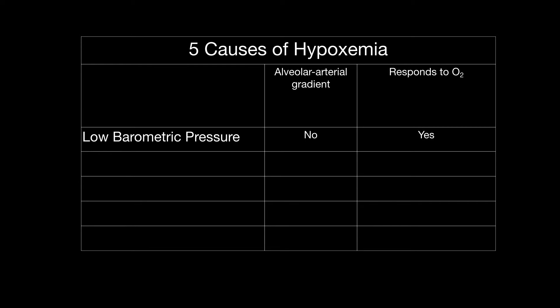Let's start with low barometric pressure. In low barometric pressure, the actual container — the size of the alveoli — is just smaller, and because it's smaller, it has less room for the partial pressure of oxygen. So the problem isn't at the alveolar capillary interface; it's a problem with the size of the alveoli. But it does respond to oxygen, because you can increase the partial pressure of oxygen by placing a patient on oxygen, increasing the fraction of inspired oxygen.